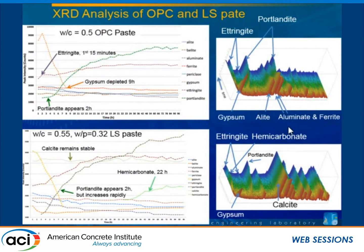XRD analysis confirms the TGA results. In our OPC system, calcium hydroxide begins to appear at about two hours, remains at similar levels, then increases as hydration progresses. In the limestone system, once calcium hydroxide formation starts, it immediately takes off — that's the reduction of the induction period and the accelerating effect. We also notice that around 22 hours, hemicarbonate begins to form, coinciding with the TGA result where calcium carbonate starts to form hemicarbonate. Those are the reactions of the limestone.